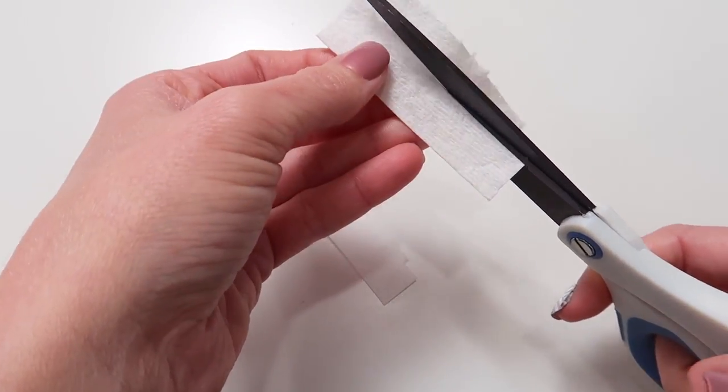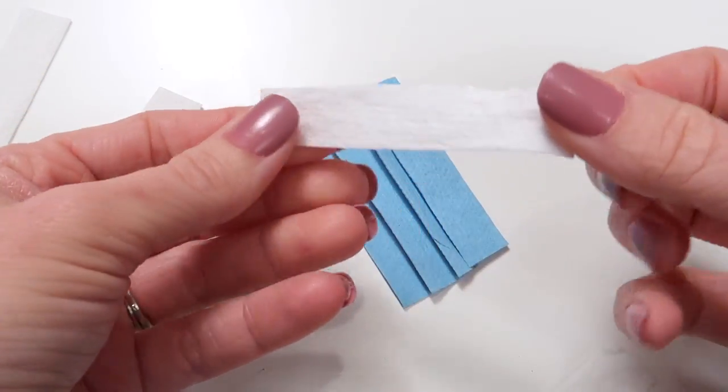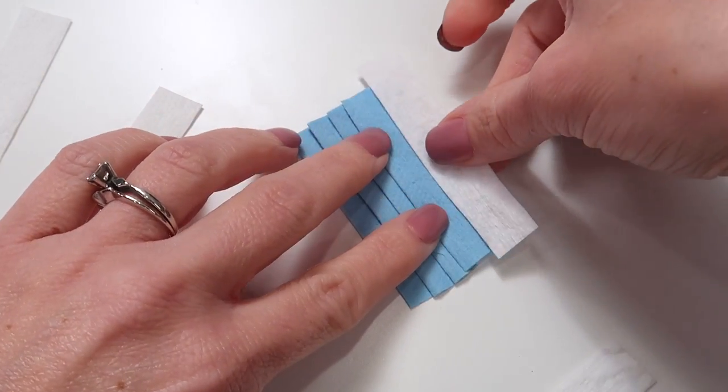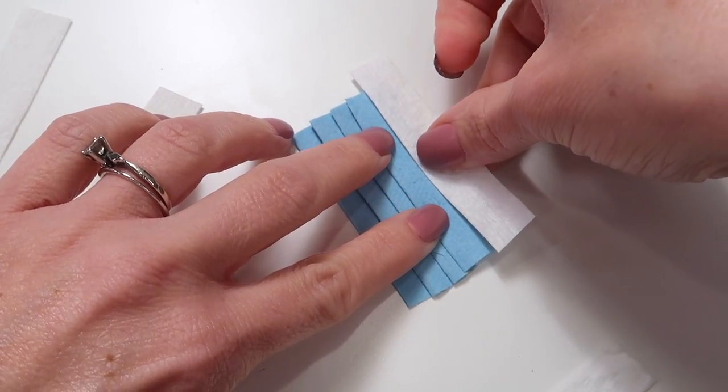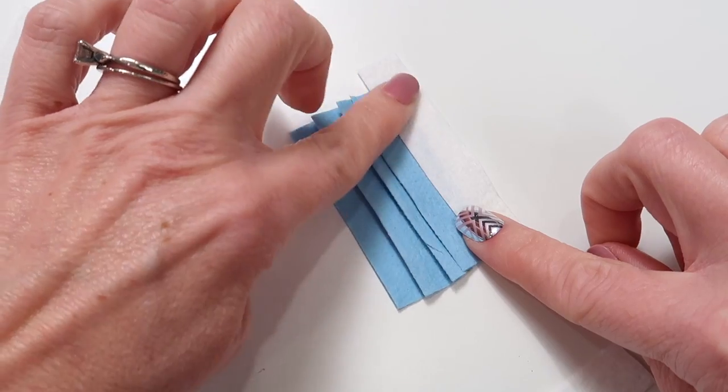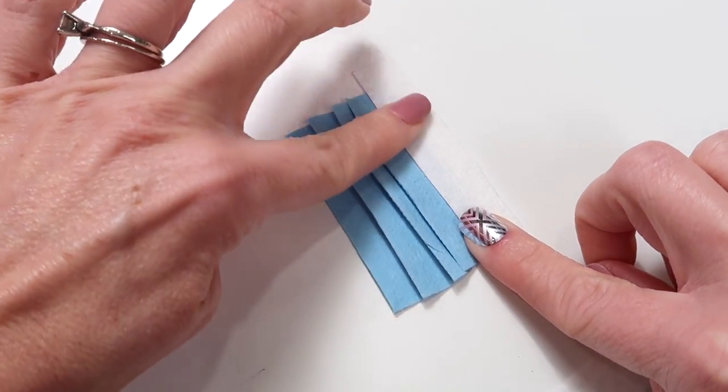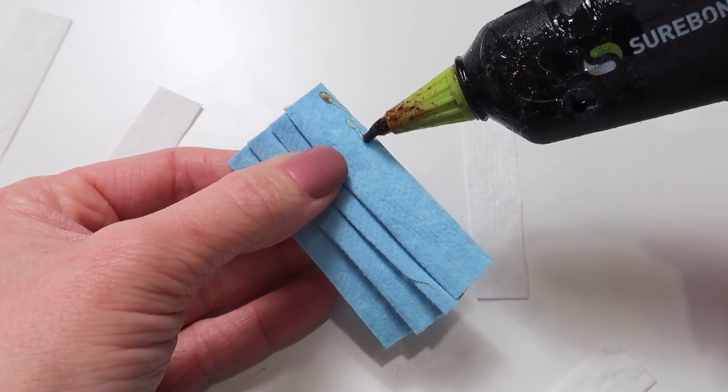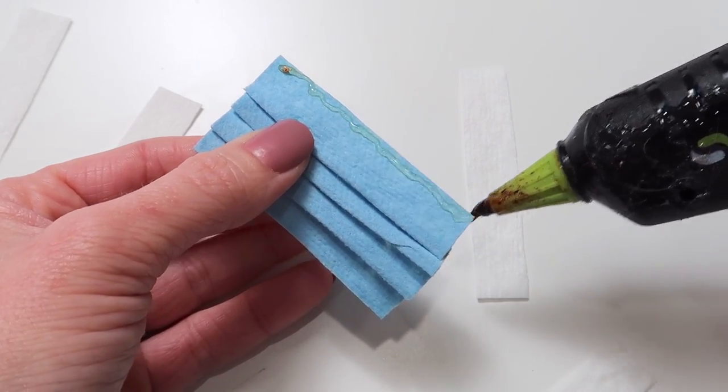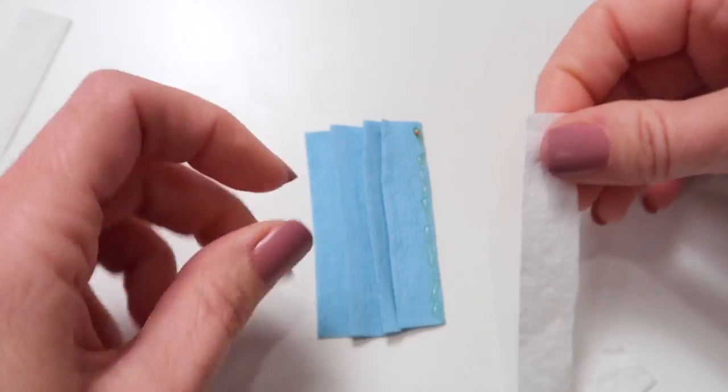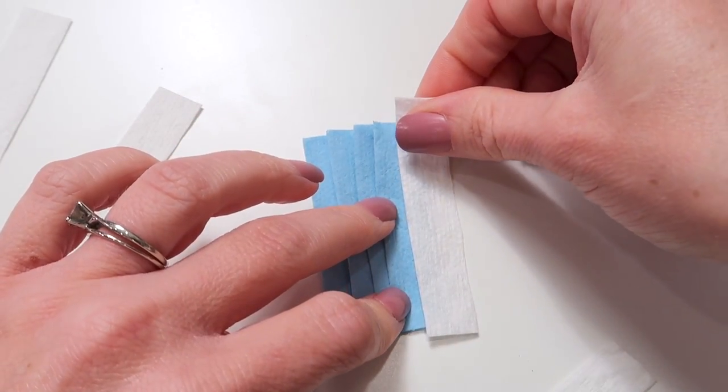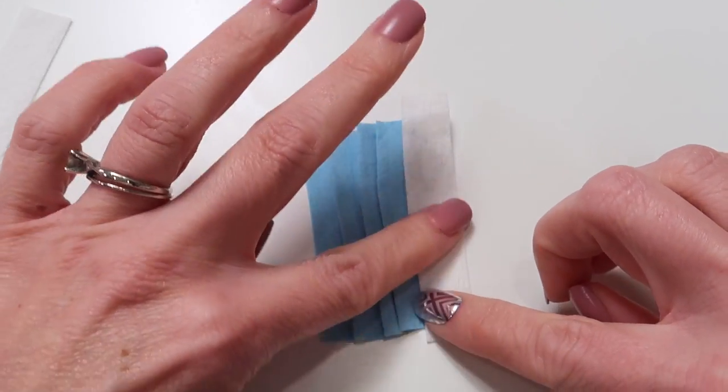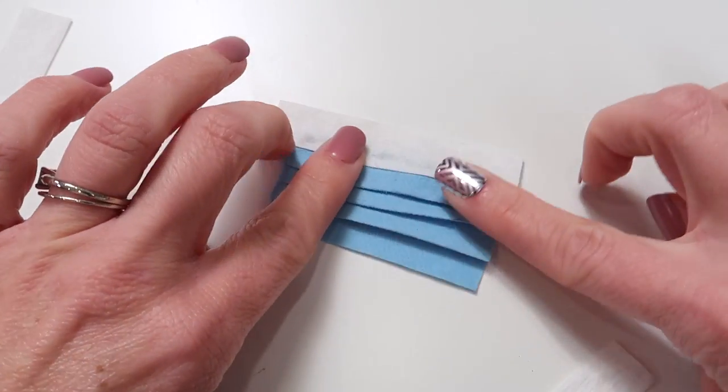Now you will take your white strips and glue them to the top and bottom of the mask. You want them to hang off about halfway so that you can fold them onto the backside. You can use white school glue - it'll work just the same, it'll just take a little bit longer to dry. But if you know me, I love using hot glue on pretty much everything.